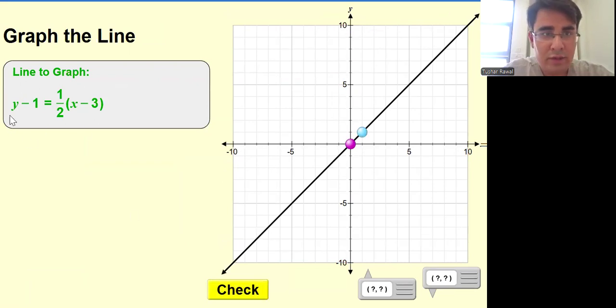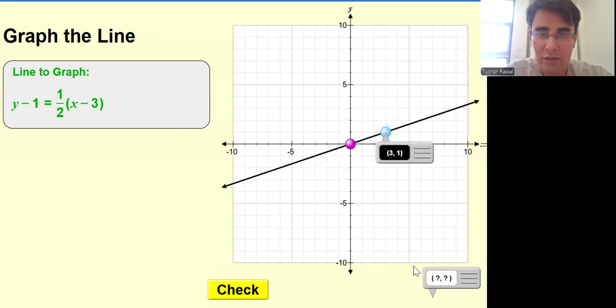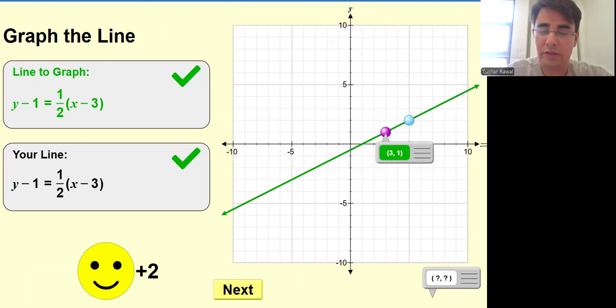So it should be coming from here. That's it. Now what is the slope? One over two. So one step up and two steps over here. One step up and two steps on the right. That's it, that's correct.